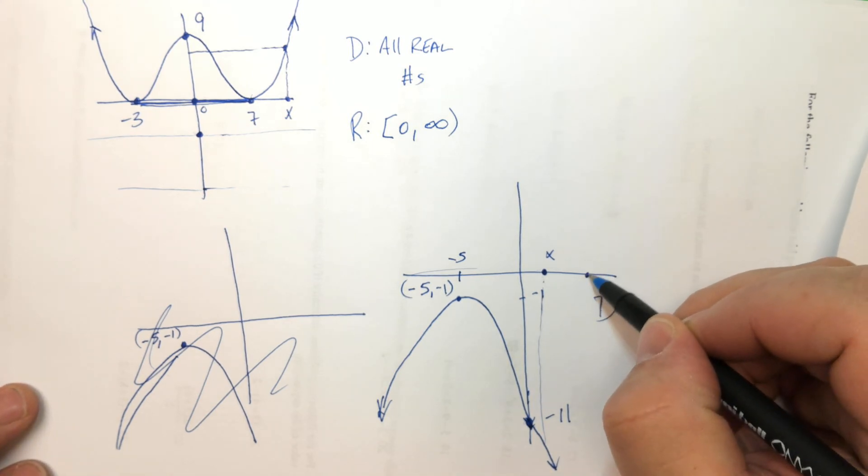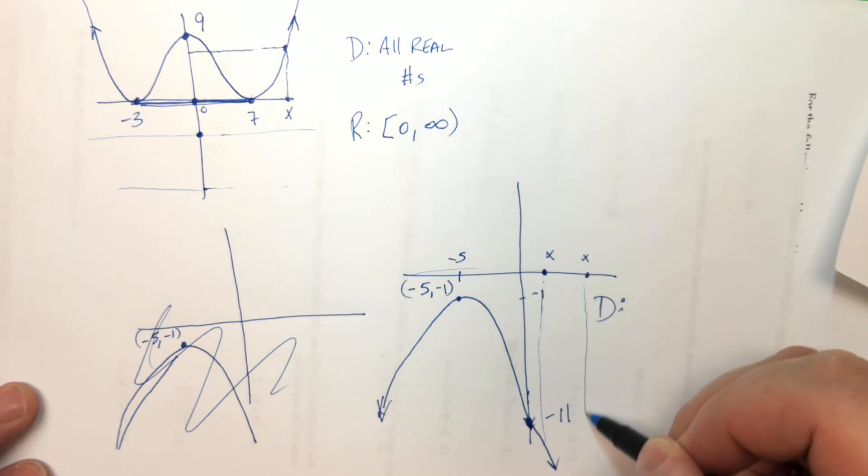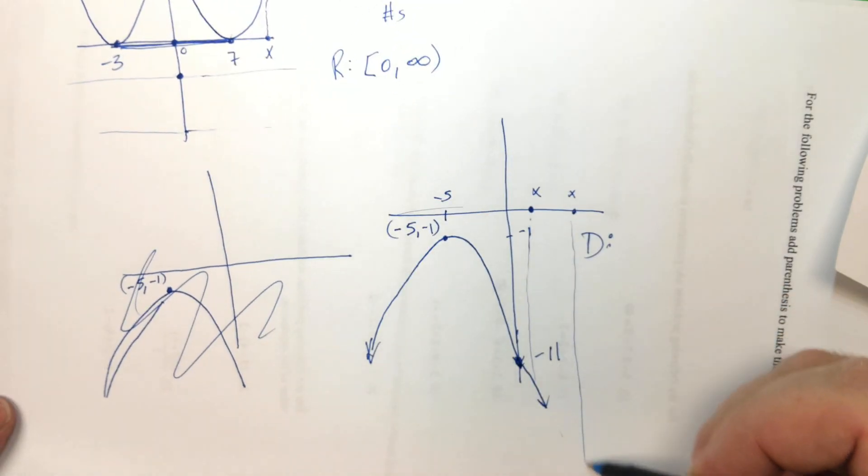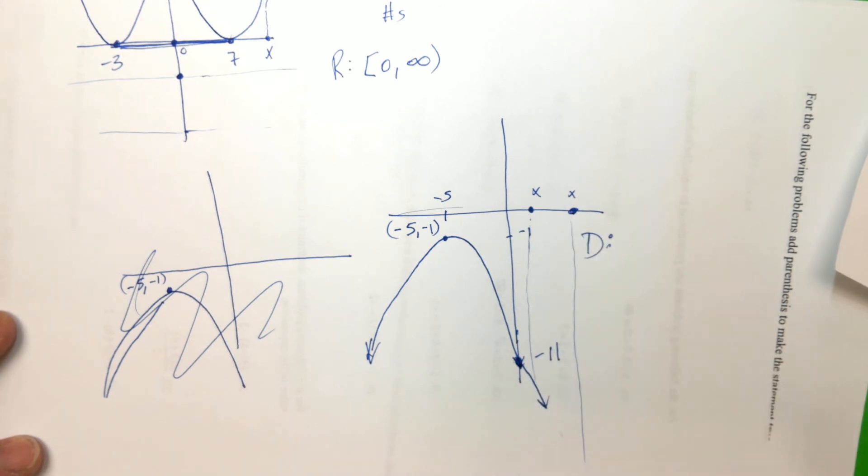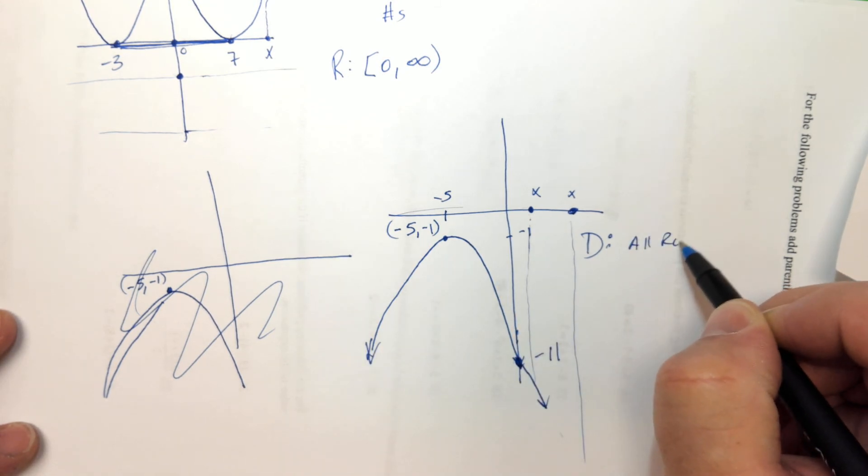If you put a number here for x, if you go down far enough, the arrow says that it keeps going. So eventually it's going to have like a coordinate. And this will be a number. This will be the input. Do you see what I mean? So the domain is all real numbers again.